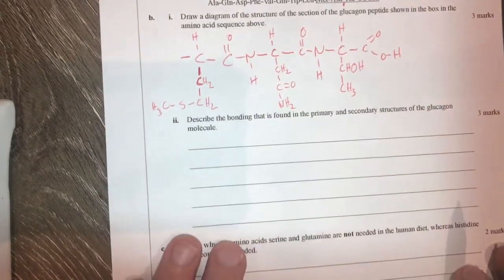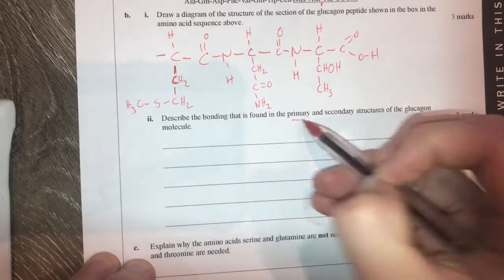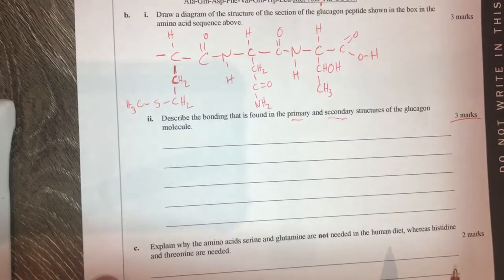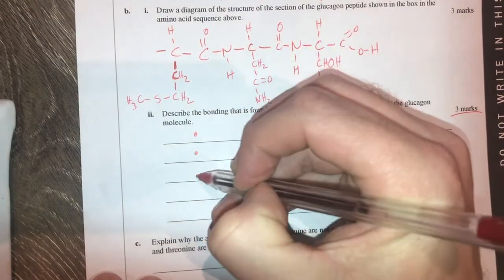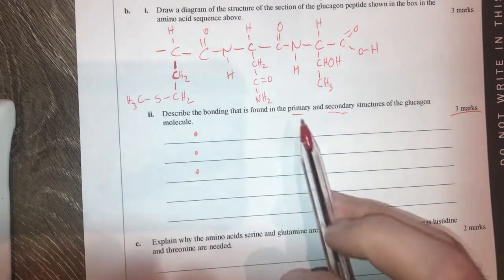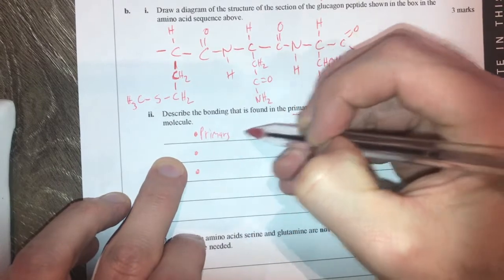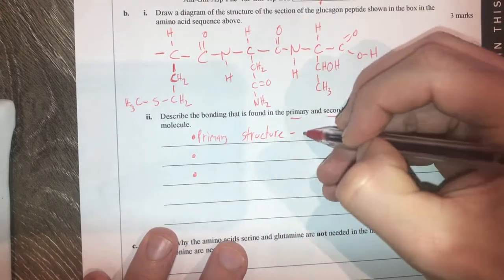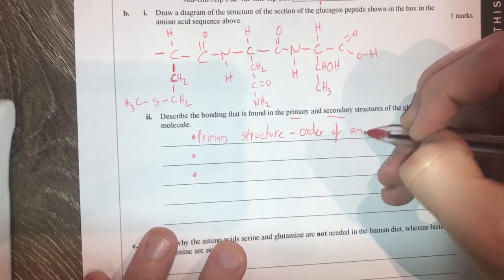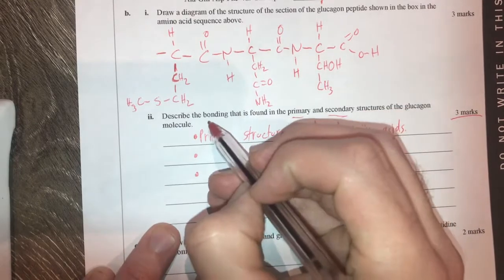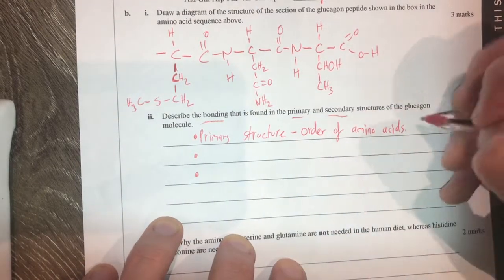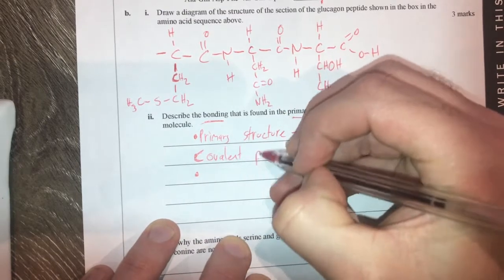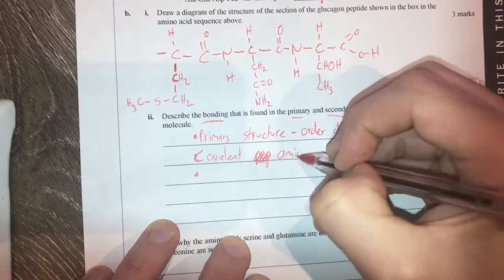That's three marks, hopefully, which is good. Next, describe the bonding that is found in the primary and secondary structures of this molecule. Obviously, we're looking at primary, secondary structures of proteins here. We've got three marks again. This is a worded question, so the first thing I'm going to do is put in three dot points there so I can try and hit those. I'm going to start off with talking about the primary structure. You guys should know from your learning this stuff that the primary structure of a protein is the order of amino acids.